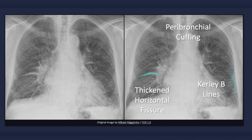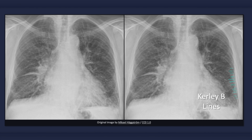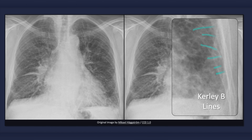An edematous interstitium is another important feature of congestive heart failure. Three signs of thickened interstitial tissue include Kerley B lines, peribronchial cuffing, and interlobar fissure thickening. Kerley B lines are fine linear opacities 1 to 2 mm in width, typically located peripherally in the lower lung fields near the costophrenic angles. When viewed close up, they extend perpendicularly inward from the pleura and are up to 3 cm in length. These opacities can also be seen head-on, in which case they are referred to as Kerley C lines, or radiating outward from the hilum, called Kerley A lines.